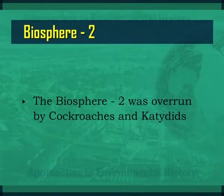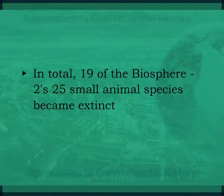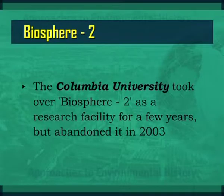Further, Biosphere 2 was overrun by cockroaches and katydids. In total, 19 of Biosphere 2's 25 small animal species became extinct. Before the two-year period was complete, all the plant-pollinating insects had died, thereby dooming most of the plant species to extinction. Despite this, the Biospherians were able to produce 80 percent of their food supply and the facility's wastes and wastewater were recycled. The Columbia University took over Biosphere 2 as a research facility for a few years but abandoned it in 2003.